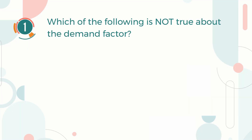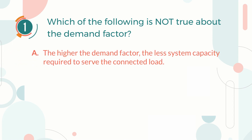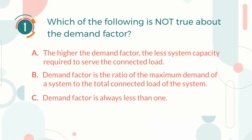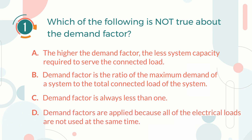Number 1. Which of the following is not true about the demand factor? A. The higher the demand factor, the less system capacity required to serve the connected load. B. Demand factor is the ratio of the maximum demand of a system to the total connected load of the system. C. Demand factor is always less than 1. D. Demand factors are applied because all of the electrical loads are not used at the same time.